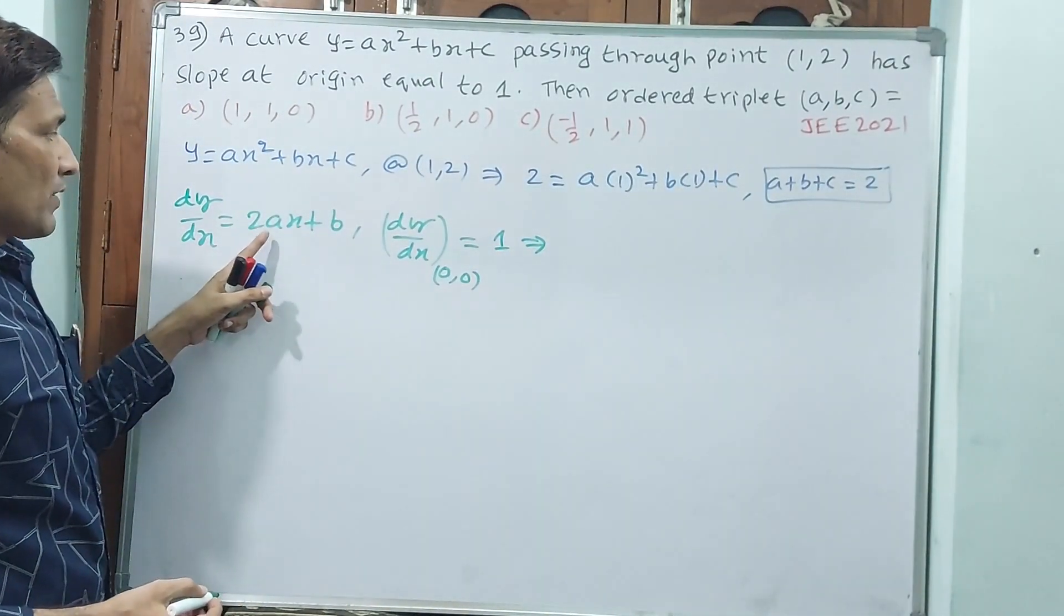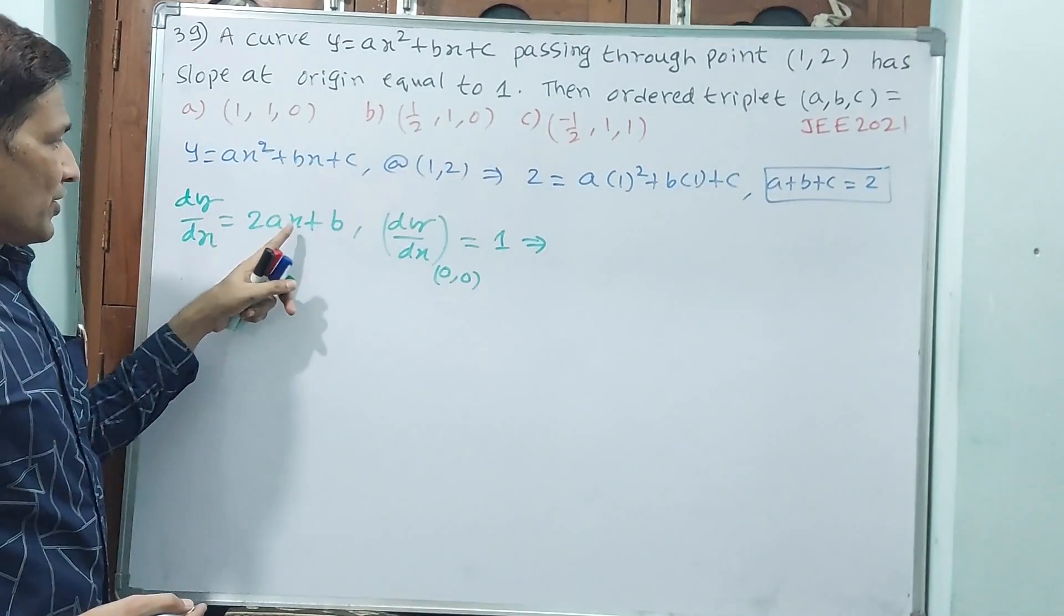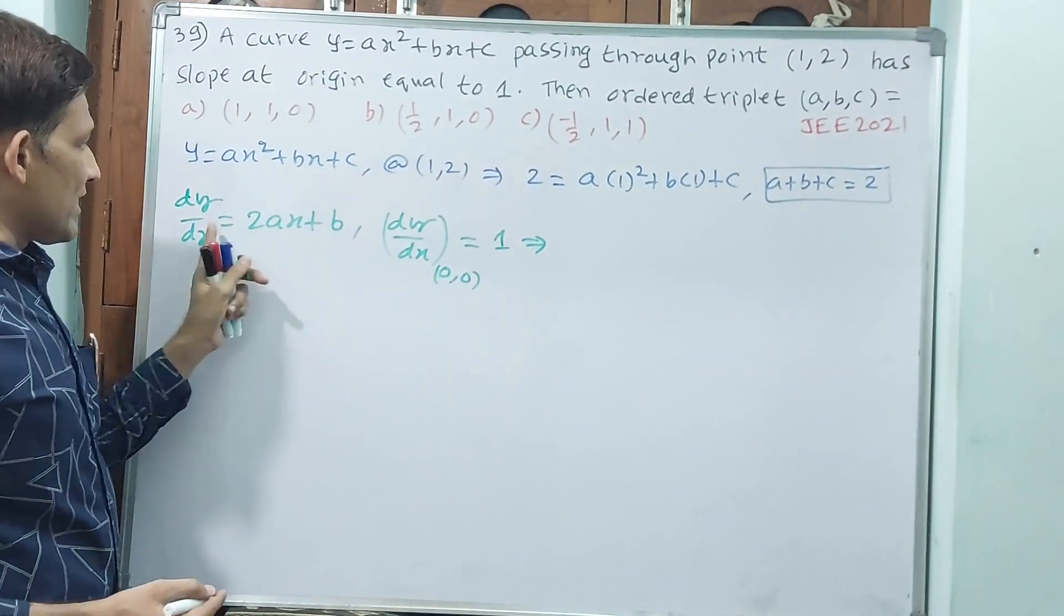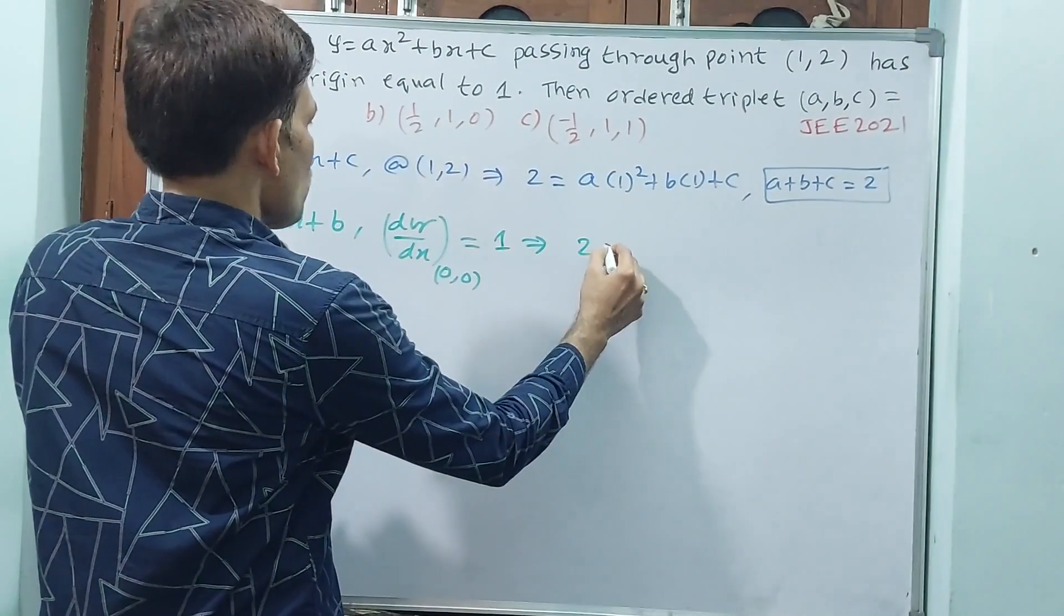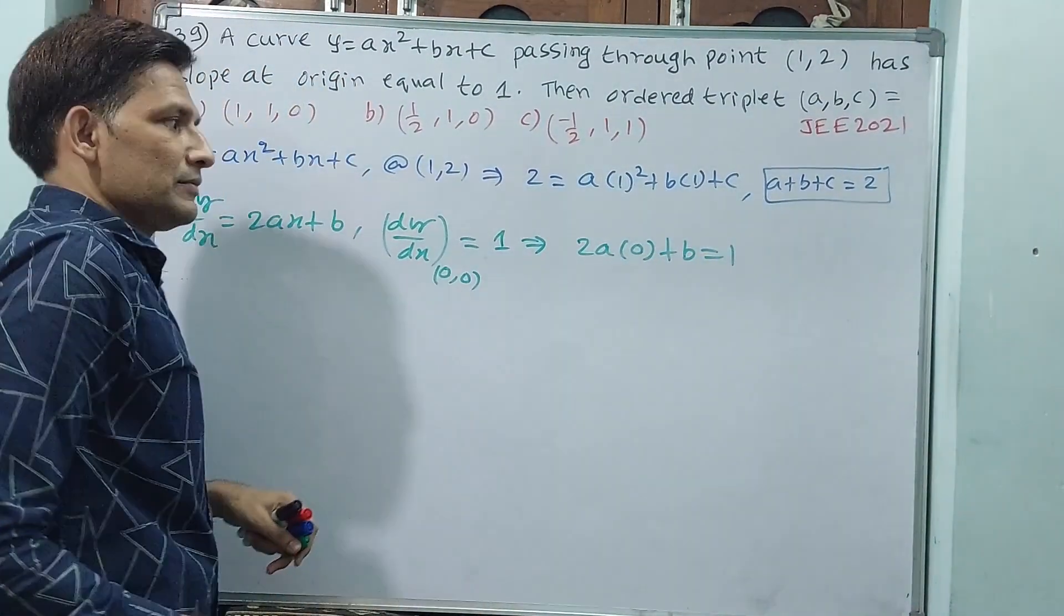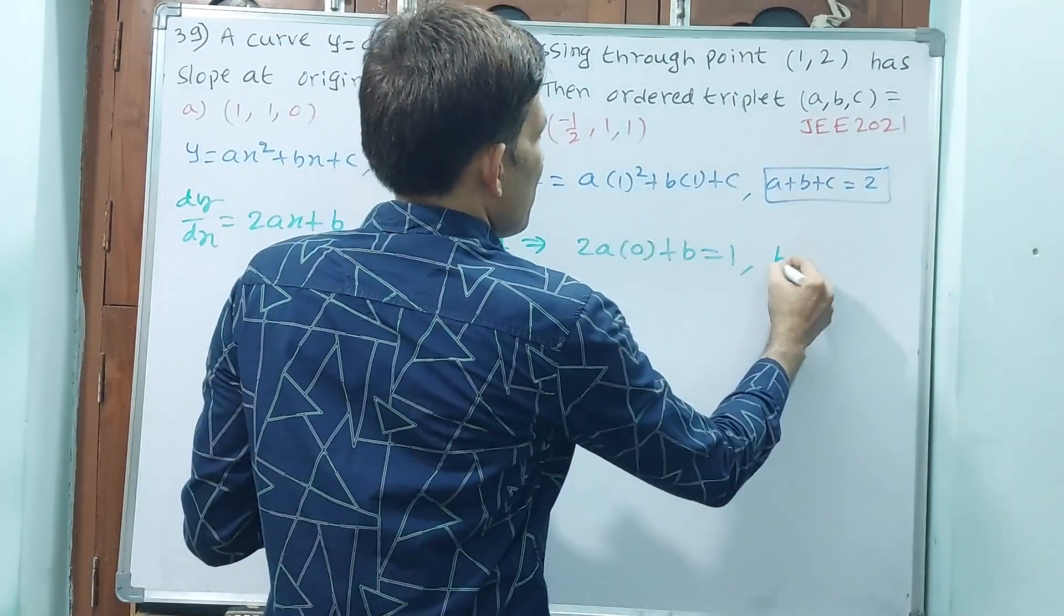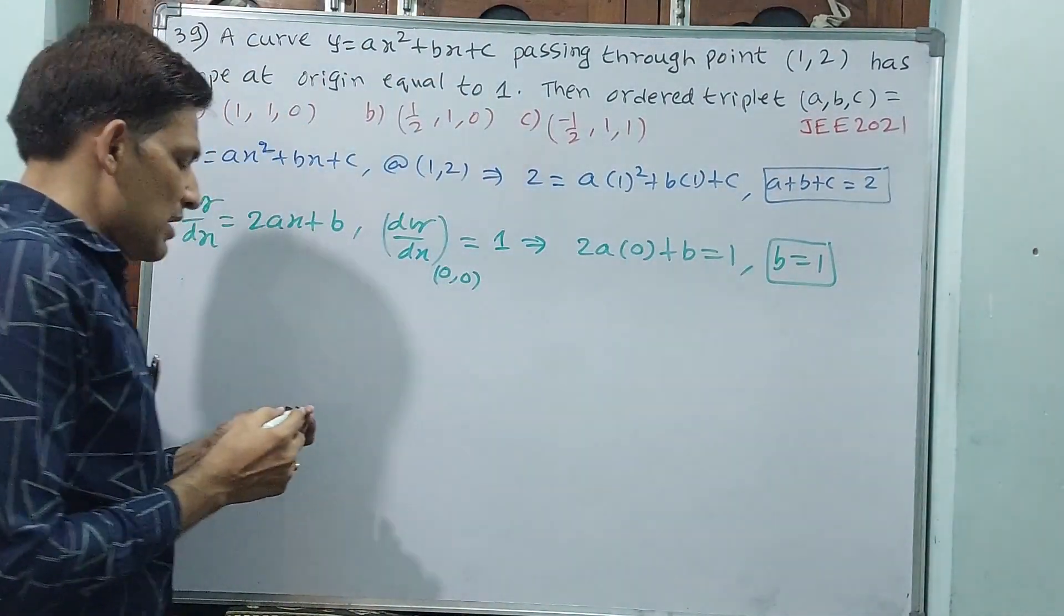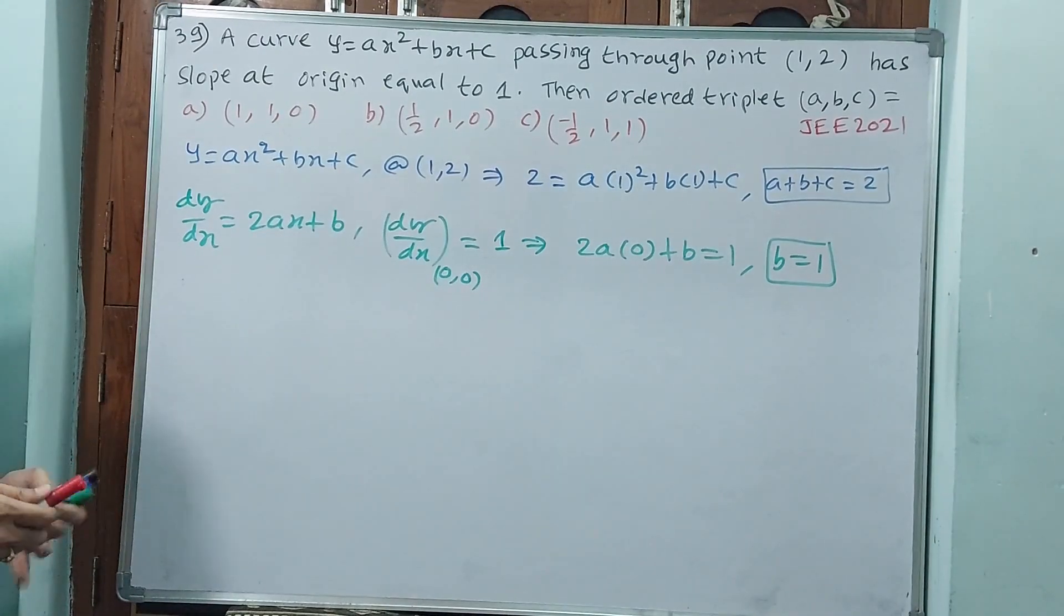What we are going to substitute here: in x place 0. So 2a(0) + b = 1. That means b = 1. Why? Because 2a(0) is 0, so b = 1.